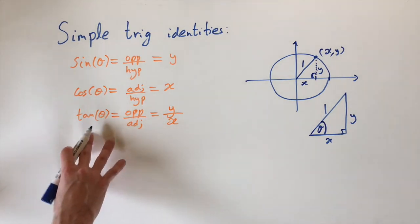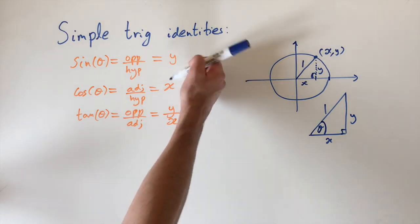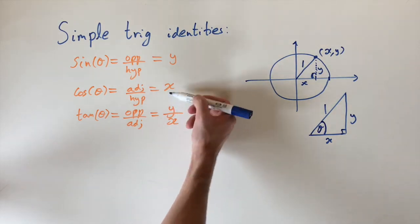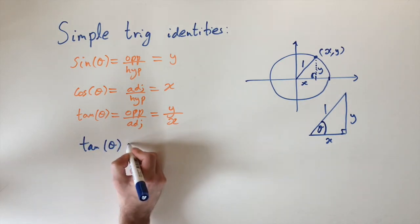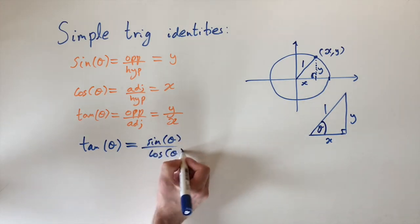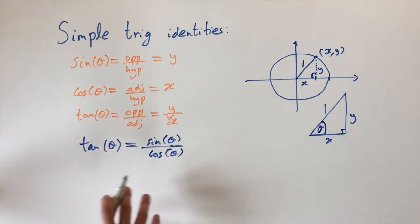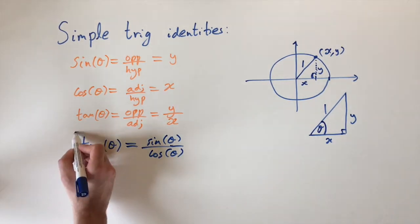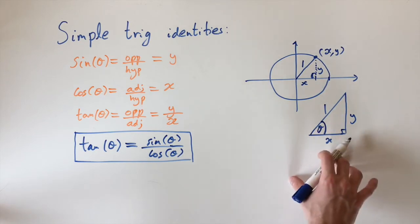Looking at tan of theta gives us our first identity. We have tan θ = y/x, and since y = sin θ and x = cos θ, this immediately tells us that tan θ = sin θ / cos θ. We call it an identity because it's true for all angles theta — no matter what angle we choose. I'll put this in a box because it's really important.